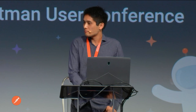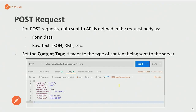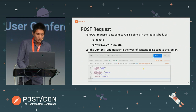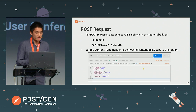All right, everyone good to continue? So that was a GET request. What about POST requests? For POST requests, we often have to define some data to send to the API, defined in the request body. You can define form data, raw text, JSON, XML. You also want to set the content type header to indicate the type of content you're sending, but Postman can do that for you in a lot of cases — it recognizes the content in the body and automatically defines the header.